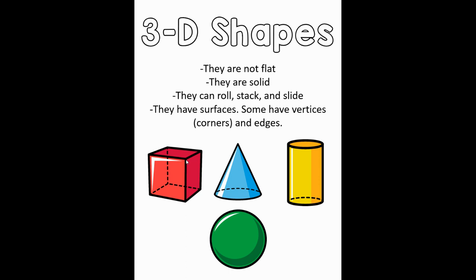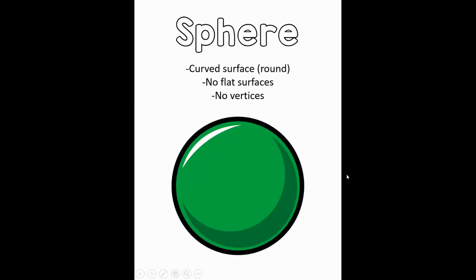So 3D shapes are a little bit different, and we are going to talk a little bit more about each one of these 3D shapes. The first 3D shape is called a sphere. Can you say sphere? A sphere has a completely curved surface. It is totally round — no flat surfaces, no corners or vertices. So this is an example of a 3D shape that you can roll across a table or across the floor. A sphere.